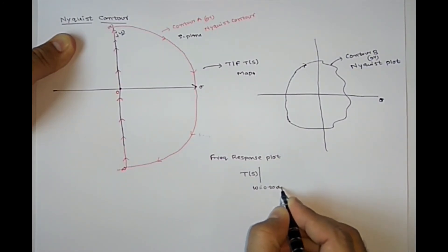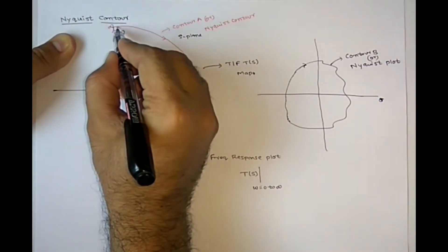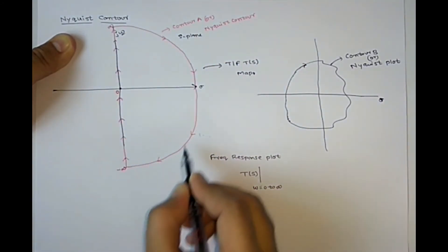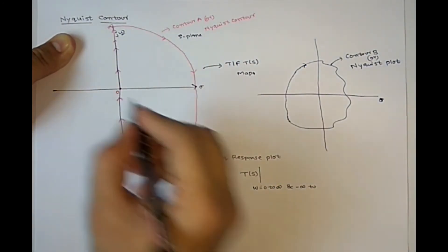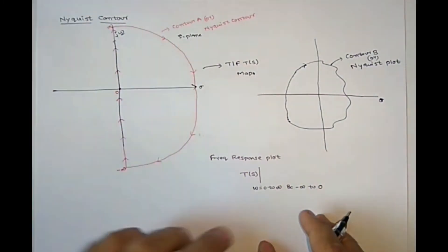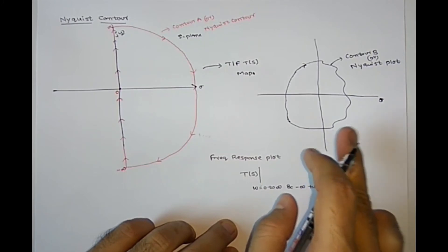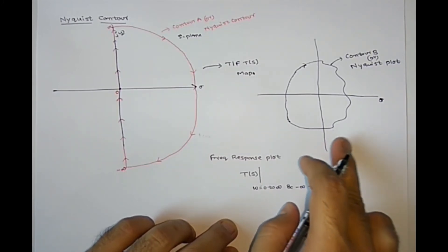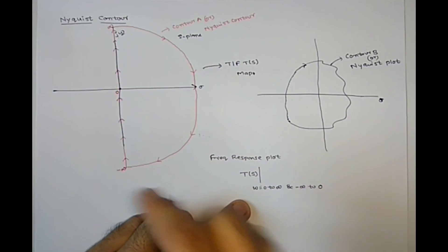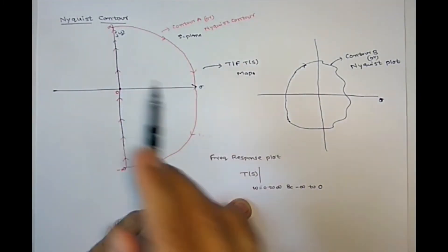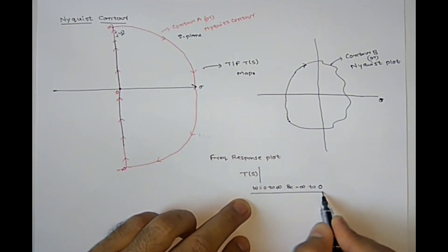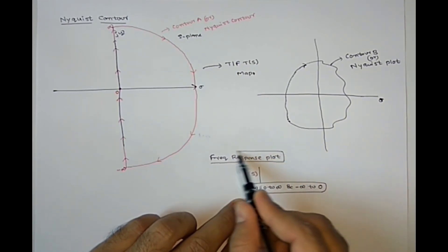So here omega you are varying points, zero to infinity. And this is entire infinity only, this entire infinity is the same point. And minus infinity to, again you are coming back to zero. So for plotting Nyquist plot or for plotting contour B, you are varying omega from zero to infinity, and minus infinity to zero. So you are varying only omega. That's why you call frequency response plot, this one.